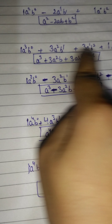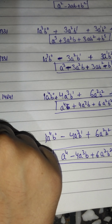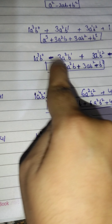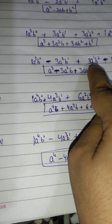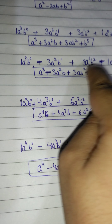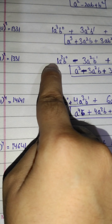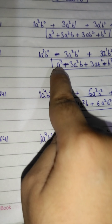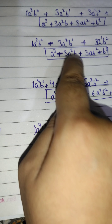Next, for (a-b)³, again 11³ = 1331, giving coefficients 1, 3, 3, 1. We start from a³, then a², a¹, a⁰, and b increases: b⁰, b¹, b², b³. Since the sign is minus, we alternate: positive, negative, positive, negative. So we get: a³ − 3a²b + 3ab² − b³.